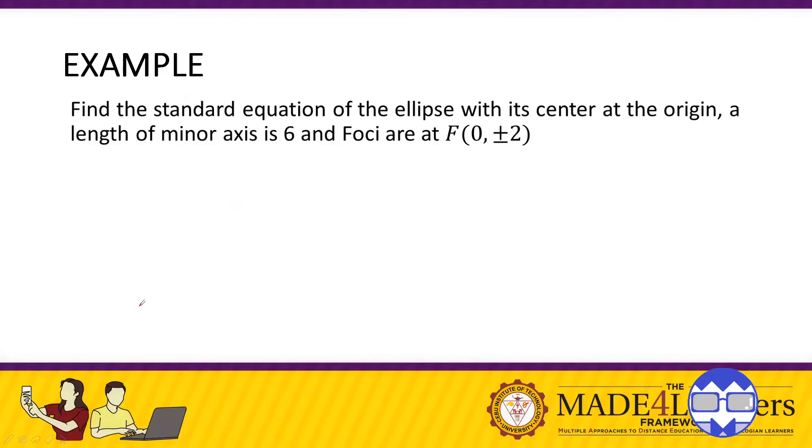Okay, so if you try to look at the given again, we have the center at the origin, so it's very easy. It's 0, 0. Length of the minor axis is 6. So this is actually the entire length, or the 2B, twice B. So to get B, we simply divide it by 2 which is 3.